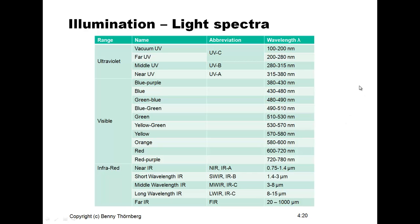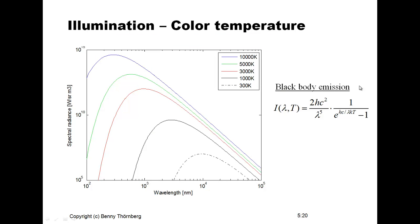You should be aware that light in nature is very seldom monochromatic. Monochromatic means it is composed of only one wavelength — no, there is a wide spectrum of different wavelengths, and light sources can have different compositions of their spectra. We can compare a light source's spectral composition with the corresponding emission spectra of a black body, and the emission intensities as a function of wavelength and temperature are defined by Planck's equation.